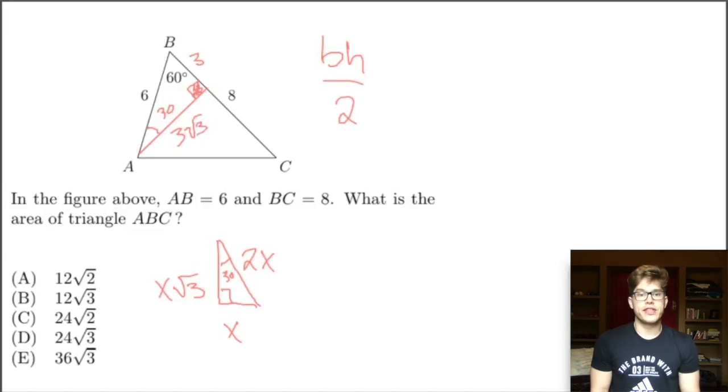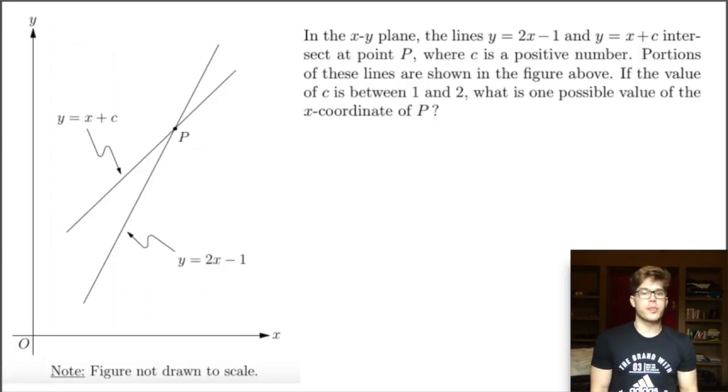Now that we have a base and our height, we see that 8 is our base. Our height is what? Our height is 3√3. And then we need to divide by 2. The 8 cancels with the 2. We're left with a 4. And our final answer is 12√3. So our answer here is B, 12√3. Excellent.